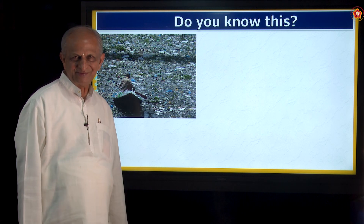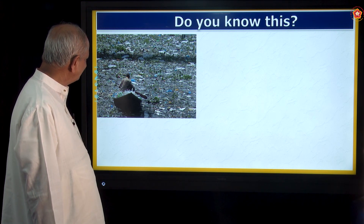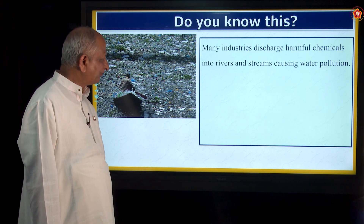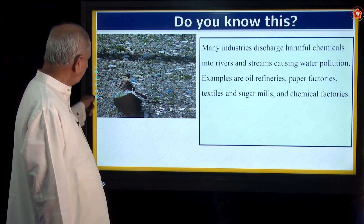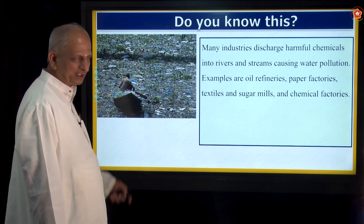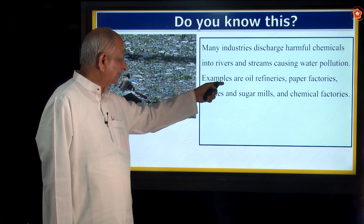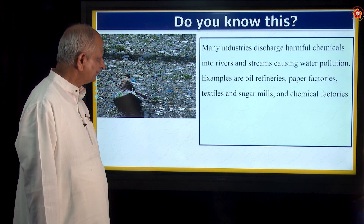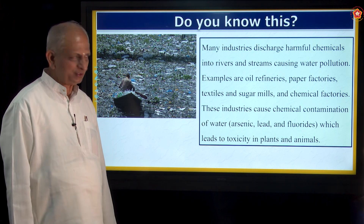Look at this figure. A man is collecting plastic bottles from the river. Many industries discharge harmful chemicals into rivers and streams, causing water pollution. This is one of the most polluted rivers. The river became so dirty because of oil refineries, paper factories, textiles, sugar mills, and chemical factories — they discharge all kinds of chemicals into the river. These industries cause chemical contamination of water.